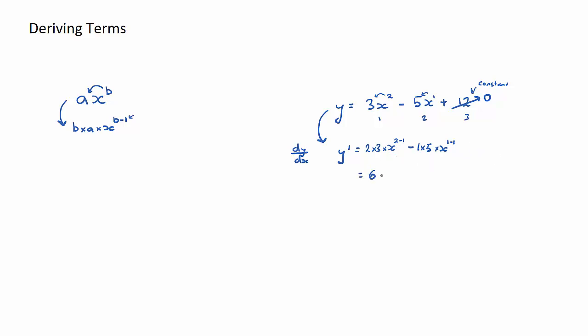Well 2 times 3 is 6. x to the power of 2 minus 1 is 1. However when we have x to the power of 1 we tend not to write the 1, so that'll just become just x.